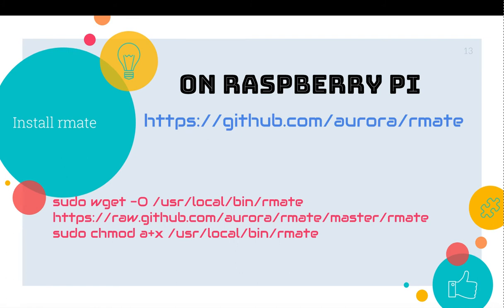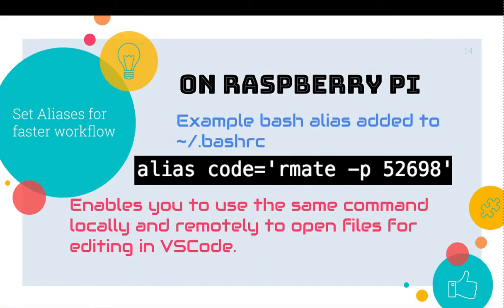rmate is a wonderful program that's going to facilitate this kind of remote editing. The last step is to add an alias on your remote device in the bash RC file that will allow you to use the same command you would use locally to open files for editing in VS Code — and that is the code command. Anybody who has used VS Code before knows that if you type 'code' in the terminal followed by the name of a file, it would open it for editing in VS Code.